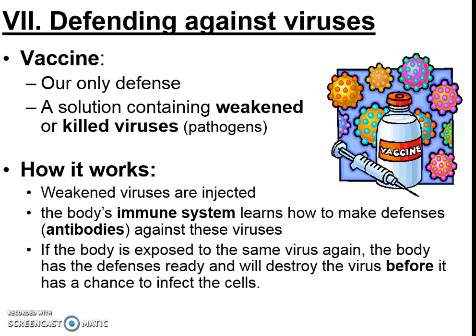Anytime our body then sees the virus, we have these defense agents called antibodies to fight them off and destroy them. This is especially effective for things like hepatitis, which you're vaccinated for when you're very young, and polio, which you also have a vaccine for when you're very young.